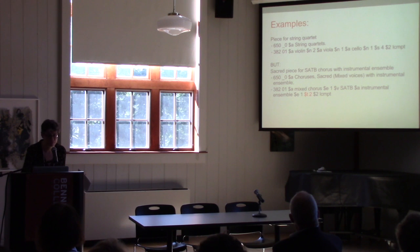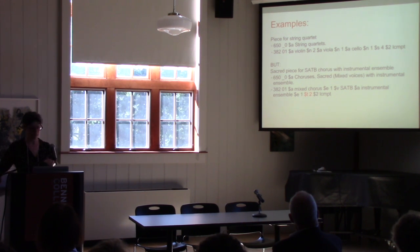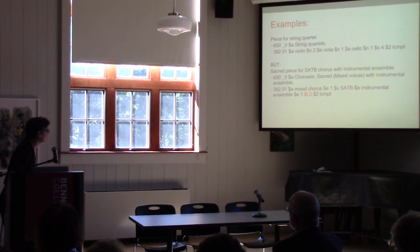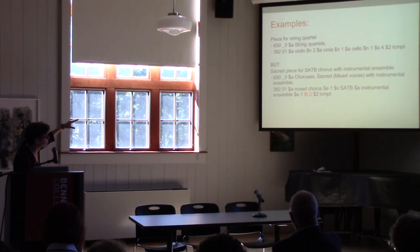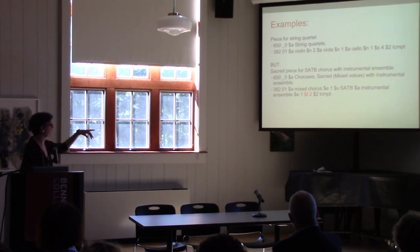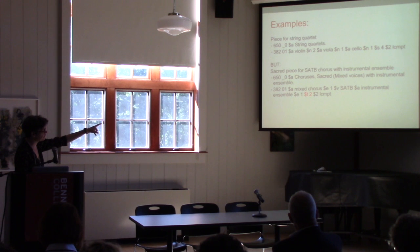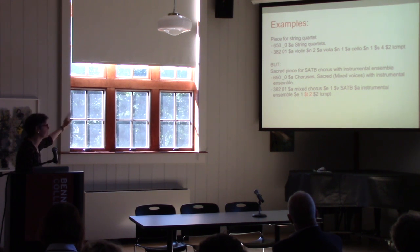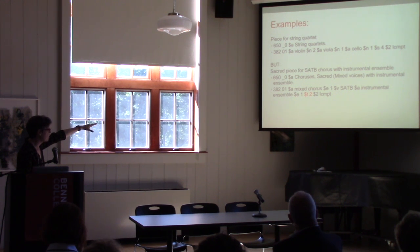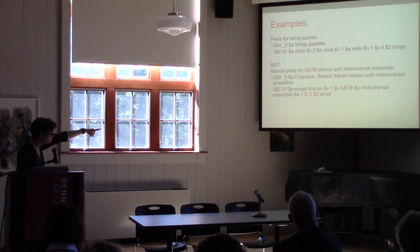Here are examples. The first: a piece for string quartet. String quartet breaks apart the medium of performance into two violins, viola, and cello. Subfield A is for the instrument, subfield N is for the numbers, and subfield S is for the total number of performers performing. Subfield 2 is for the source. This next example shows the differences. For an instrumental ensemble, notice how the mixed chorus is subfield E. Now we can total those ensembles with a subfield T.